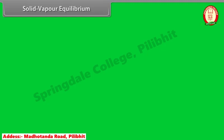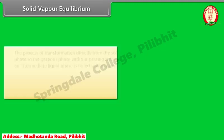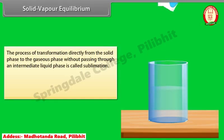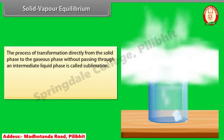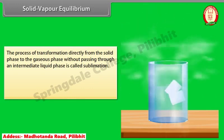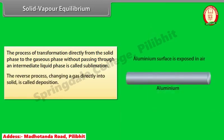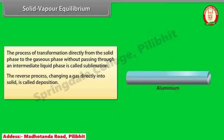Solid-Vapor Equilibrium. The process of transformation directly from the solid phase to the gaseous phase without passing through an intermediate liquid phase is called sublimation. The reverse process — changing a gas directly into solid — is called deposition. For example, dry ice.